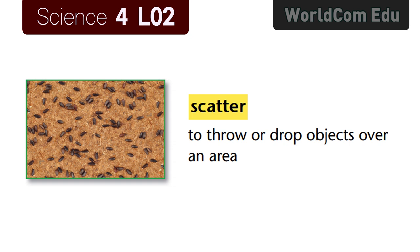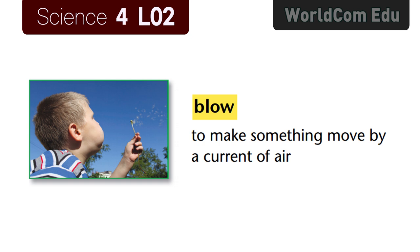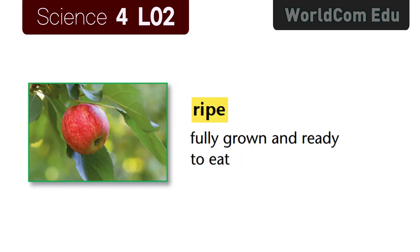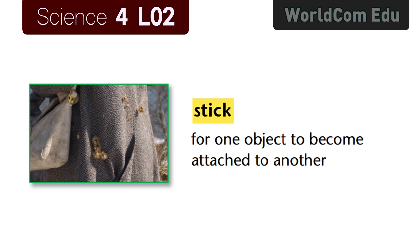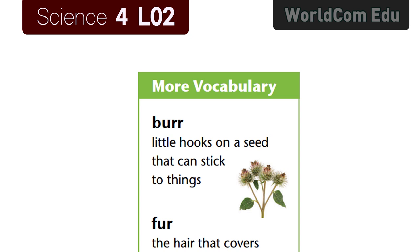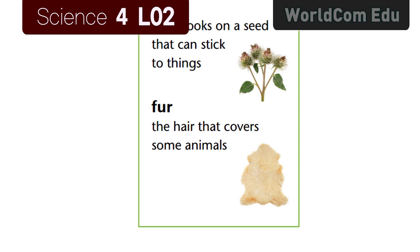Lesson 2: How Seeds Are Scattered. Vocabulary review: Scatter — to throw or drop objects over an area. Blow — to make something move by a current of air. Land — to come to the ground after moving in the air. Ripe — fully grown and ready to eat. Stick — for one object to become attached to another. Drop — to fall or to let something fall. Burr — little hooks on a seed that can stick to things. Fur — the hair that covers some animals.